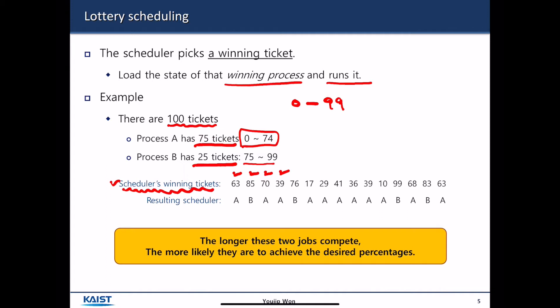So, let's say a scheduler picks up a random number like this. Here it gets 63, 85, 70, 39. So, for each scheduling time slot, scheduler picks up a random number and examines its value from 0 to 99. If the value of a ticket is less than 75, then CPU is allocated to process A. If the value of a ticket is greater than 74, then the CPU is allocated to process B.